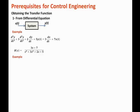Now let's show the reverse process. If we have the transfer function, can we obtain the differential equation? The answer is yes — just mimic the reversed process. For example, if h of s equals 4s plus 1 over s squared plus 3s plus 2, the denominator becomes the output derivative terms. So s squared becomes the second derivative of the output, and 3s becomes plus 3 times dy/dt.